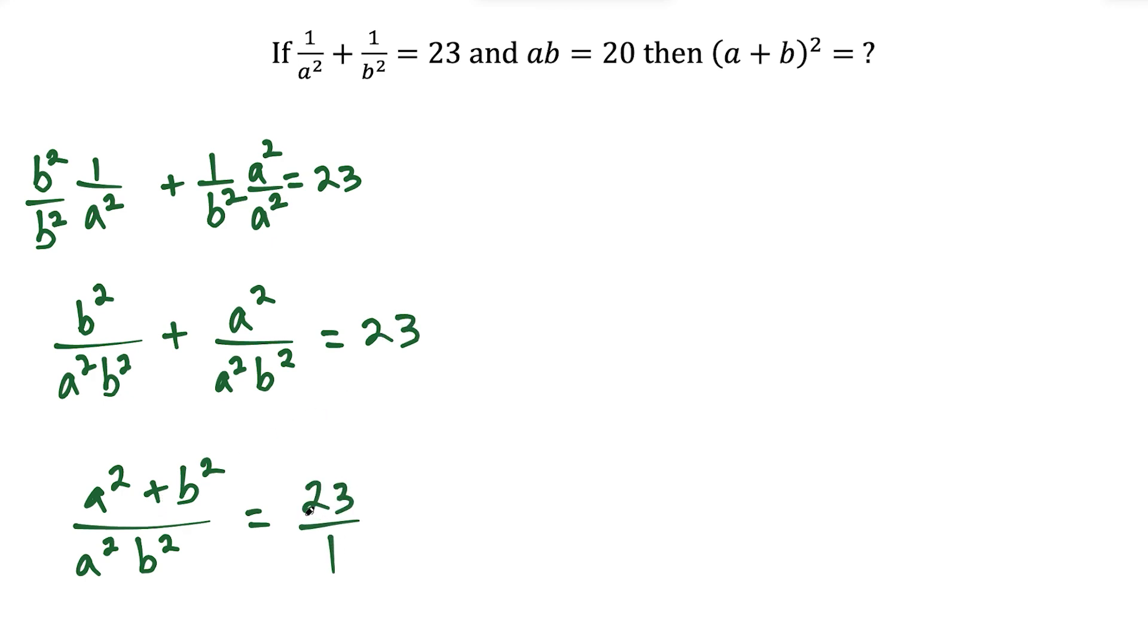And I'm going to call this 23 over 1, because now at this step, we could cross multiply. And my idea from this part on is noticing the a squared plus b squared. I think of a squared plus b squared in this form here, when the a plus b is in parentheses.